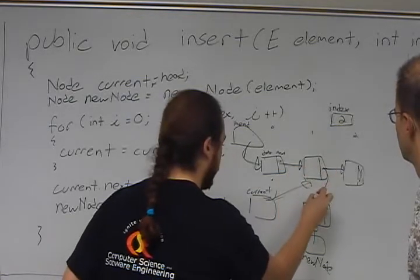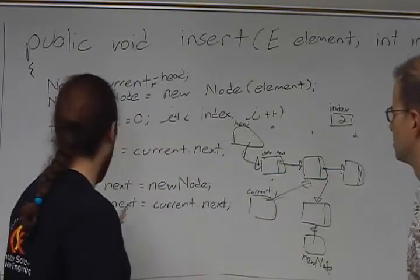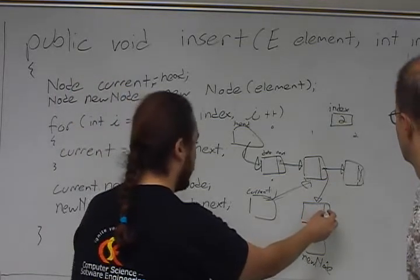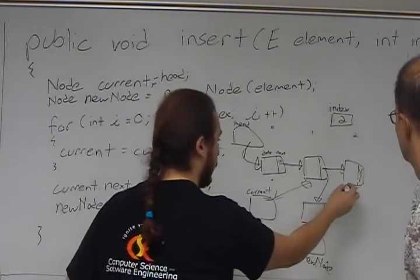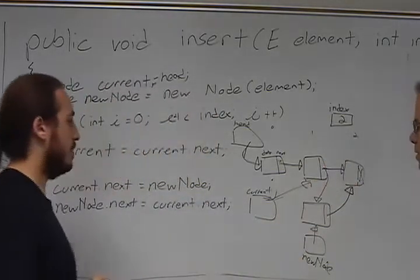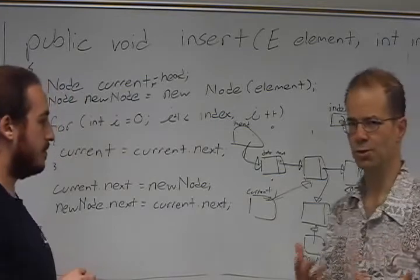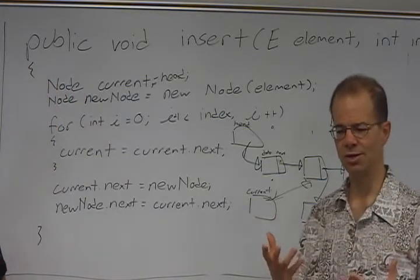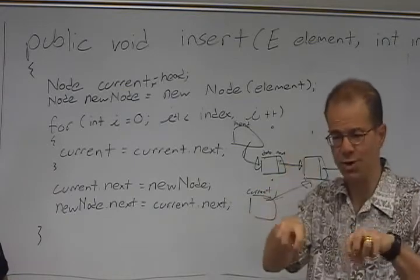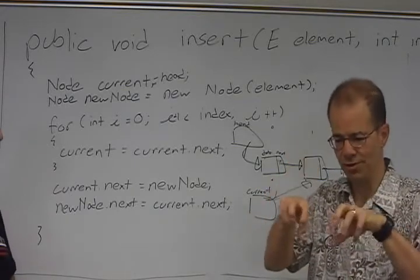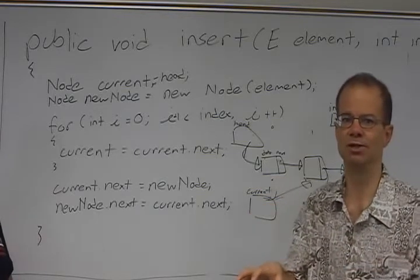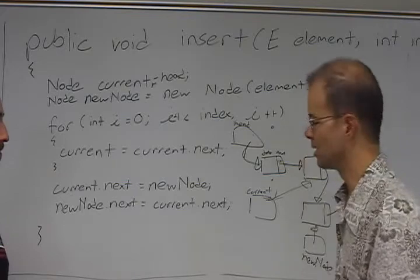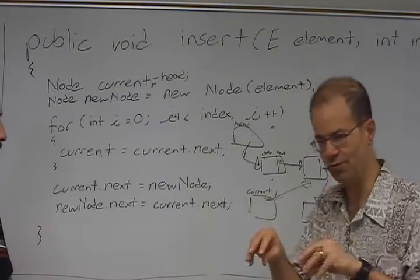So I do this, and I point that there. And then I say new node.next, right here, is current's next. So then I just point it to there. Okay. And then I insert it into my list.